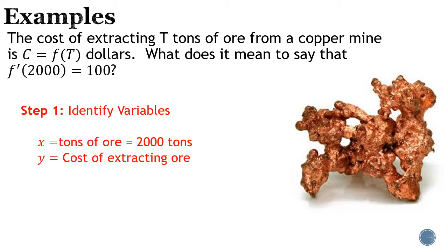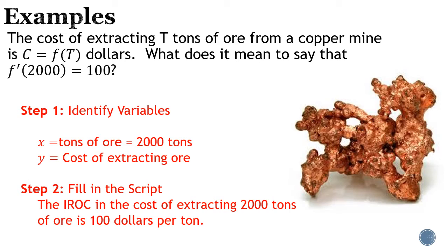Now we're going to think about our script and fill it in. You do need to say 'the instantaneous rate of change' — IROC — and then the y value, which is the cost of extracting ore. So: 'the instantaneous rate of change in the cost of extracting ore.' Then say how much ore — 2000 tons — and then the derivative: 100 dollars per ton.